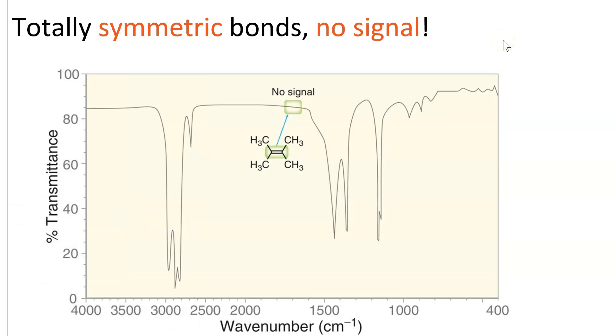Totally symmetric bonds have no signal. So this alkene that has four identical methyl groups on it, this is 2,3-dimethyl-2-butene, you don't even see a C=C double bond stretch in the spectrum because it's totally symmetrical and there's no change in dipole moment associated with that stretch.